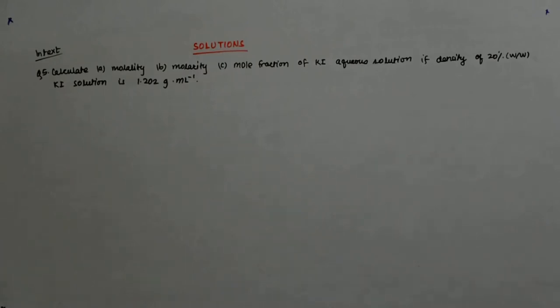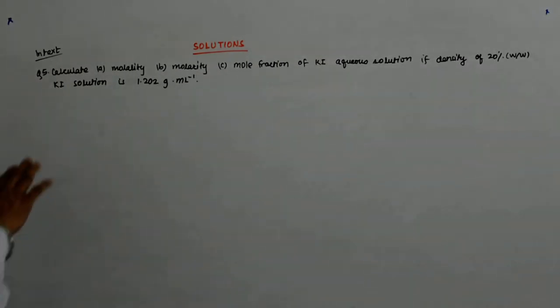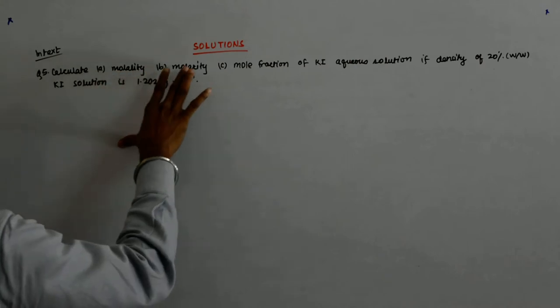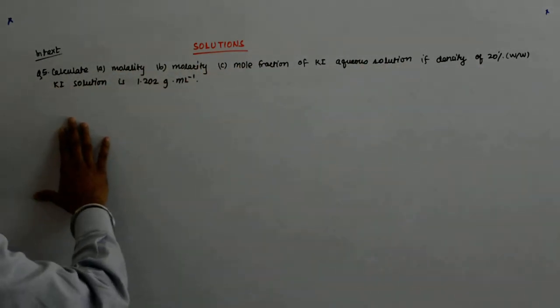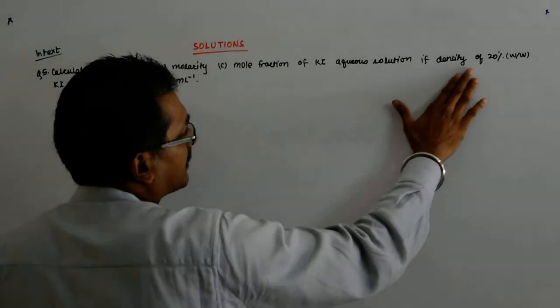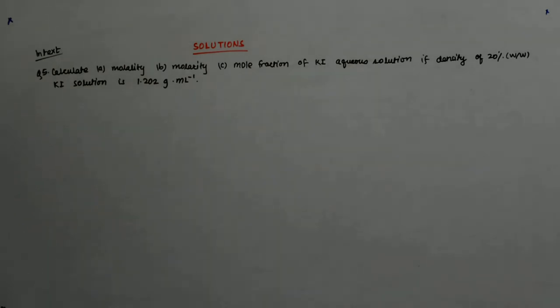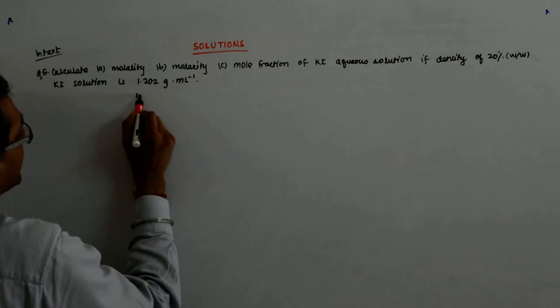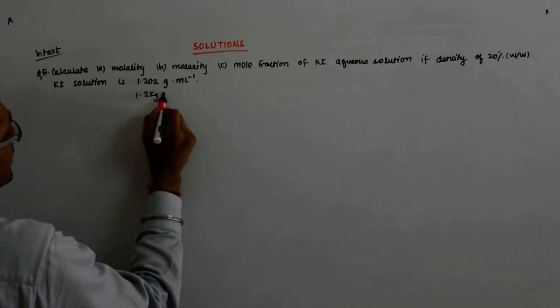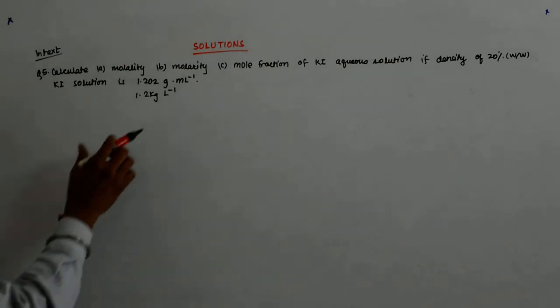We are supposed to calculate the molality, molarity, and mole fraction of a KI aqueous solution. The density is 20% w/w, and the KI solution is 1.202 gram per ml. Now 1.202 gram per ml could have been written as 1.202 kg per liter.